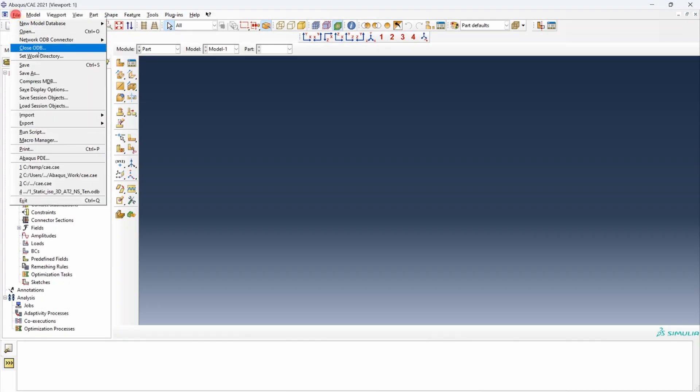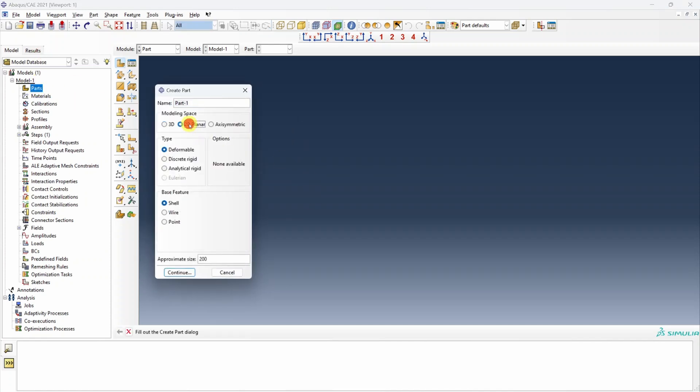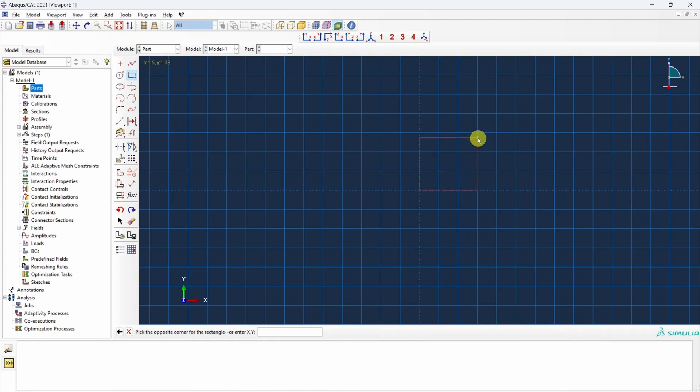First always set your work directory and then let's start with the part. This is a 2D part and I will change this size as well to 20. Now first let's draw the rectangle. One corner will be 0,0 and another corner should be 2,2 and then a circle at the center over here and we can change the dimensions of that circle. Our radius should be 0.3 and let's make sure these square edges are also 2 mm and 2 mm. Okay looks good.